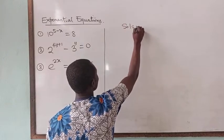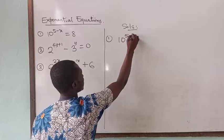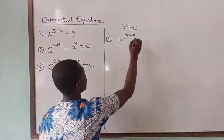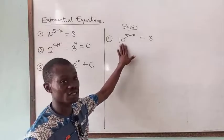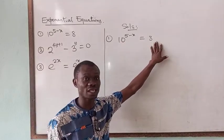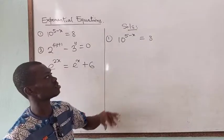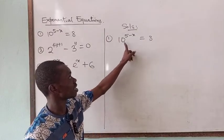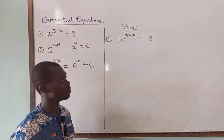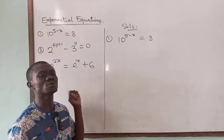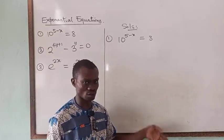Solution. For the first one, we have 10 raised to power 5 minus x is equal to 8. Here I have 10 on this side as the base, and here I have 8, which is 8 raised to power 1. How do we handle this? It is not possible to write this in base 10 — it is not possible to write both of them in any common base.